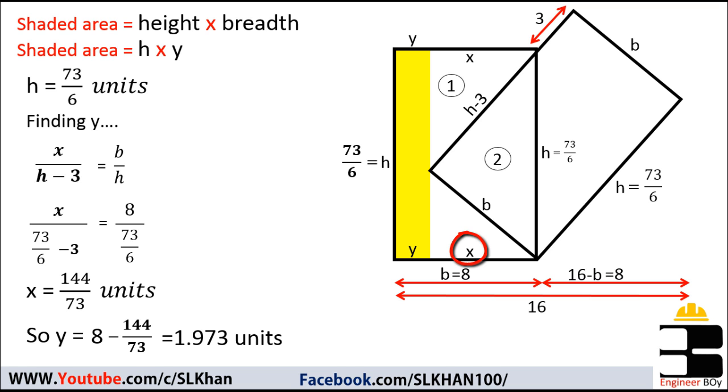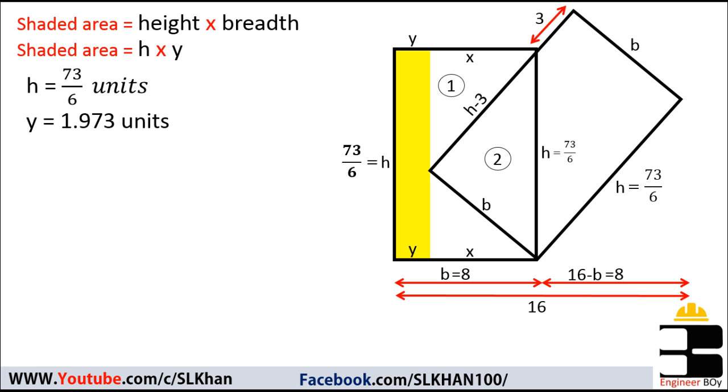Finally, we have parameters of that shaded area. So the area must be now the breadth of that shaded area, which is 1.973 units, times its height, which is 73/6. So shaded area must be 24 units.